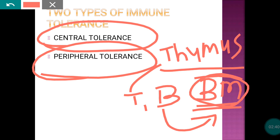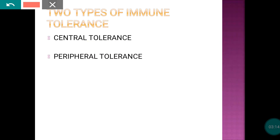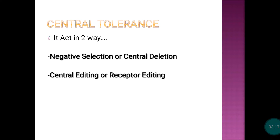If self-reactive lymphocytes — which produce antibodies against self-antigens — are produced by mistake, when they mature in the thymus and bone marrow they will be removed by central tolerance. If they escape central tolerance, they will be removed in the periphery by peripheral tolerance.